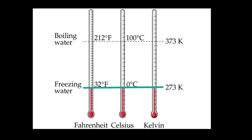Fahrenheit freezing point is 32 degrees, Celsius is zero degrees, and freezing point in Kelvin is 273 degrees Kelvin. The boiling point of Fahrenheit is 212 degrees Fahrenheit, the boiling point in Celsius is 100 degrees Celsius, and the boiling point in Kelvin is 373 degrees Kelvin.